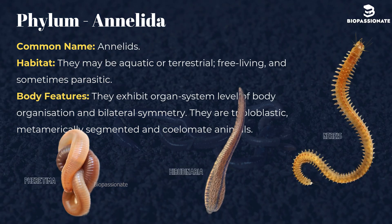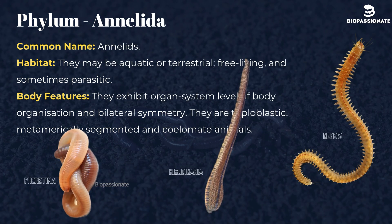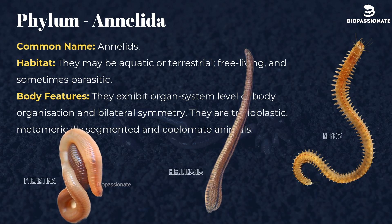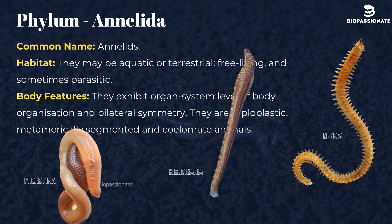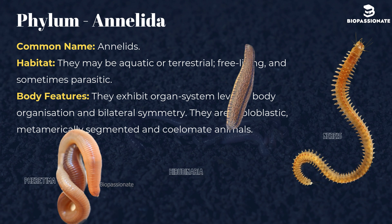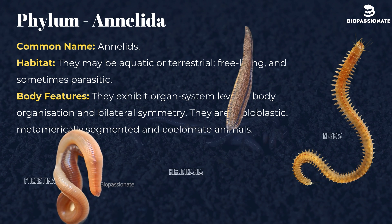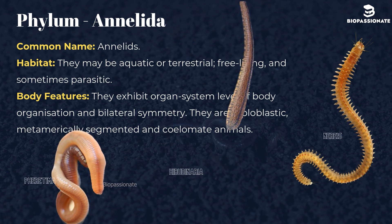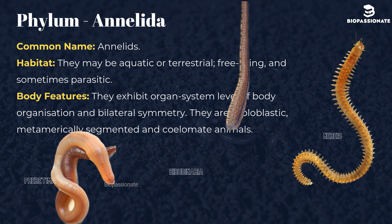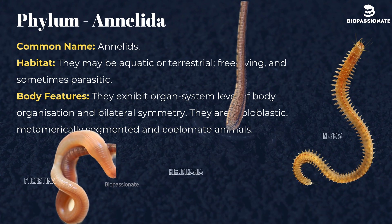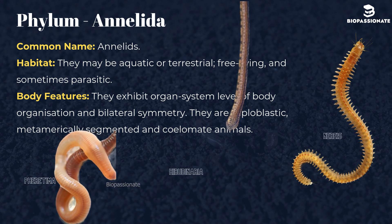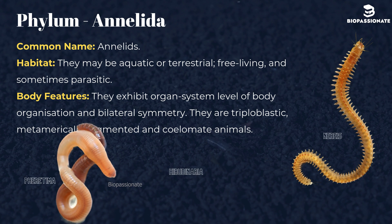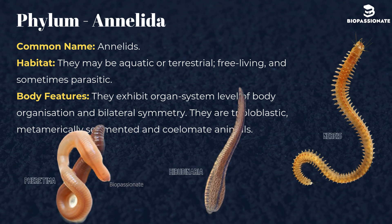Phylum Annelida, commonly known as segmented worms. They may be aquatic or terrestrial, free-living, and sometimes parasitic. They exhibit organ system level of body organization and bilateral symmetry. They are triploblastic, metamerically segmented, and coelomate animals. Common examples are Pheretima (earthworm), Hirudinaria (bloodsucking leech), and Nereis.